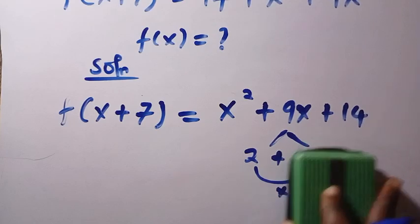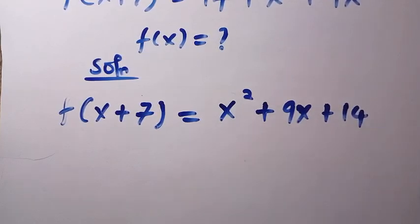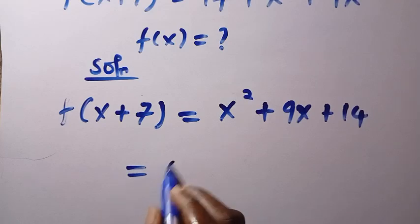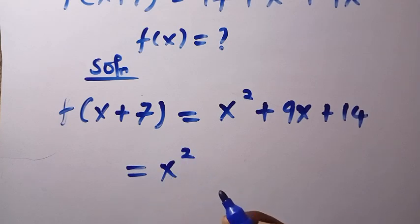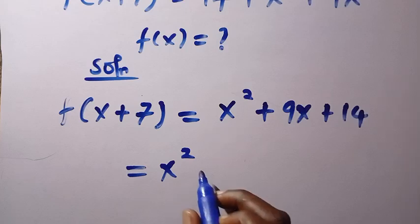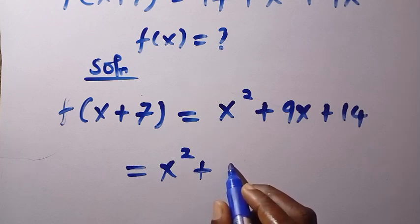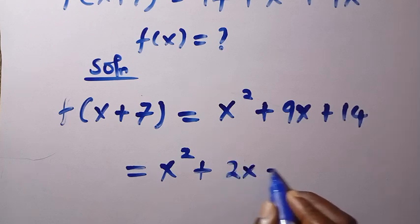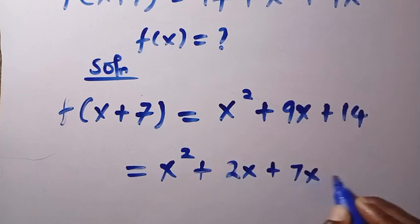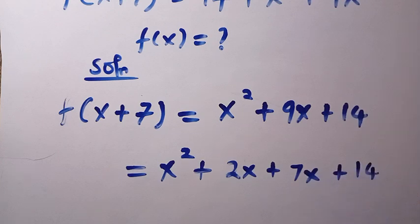Then we are going to change. Instead of 9, we replace it with 2 and 7. As we have x squared, then plus 2x plus 7x plus 14.